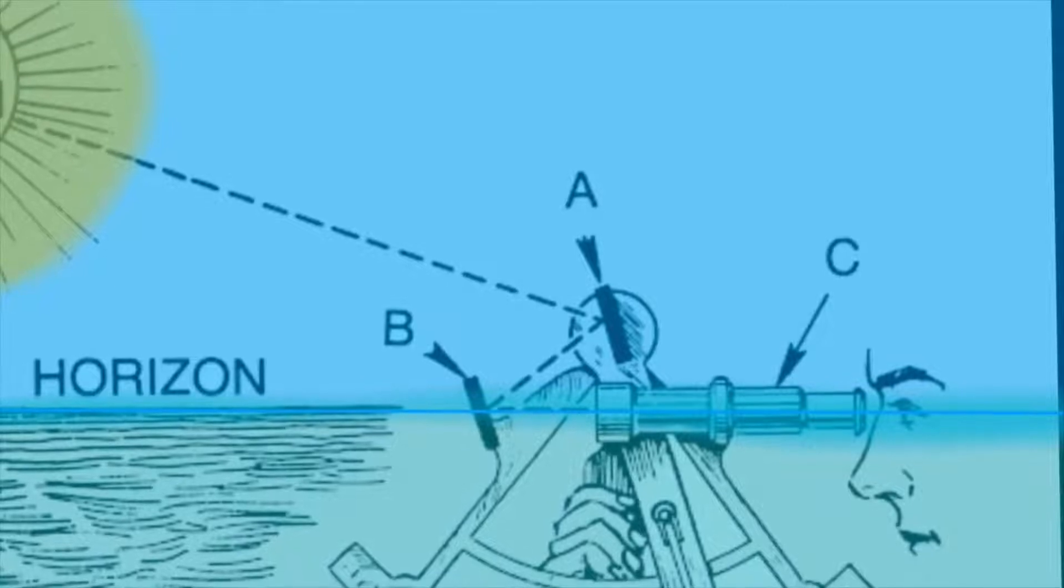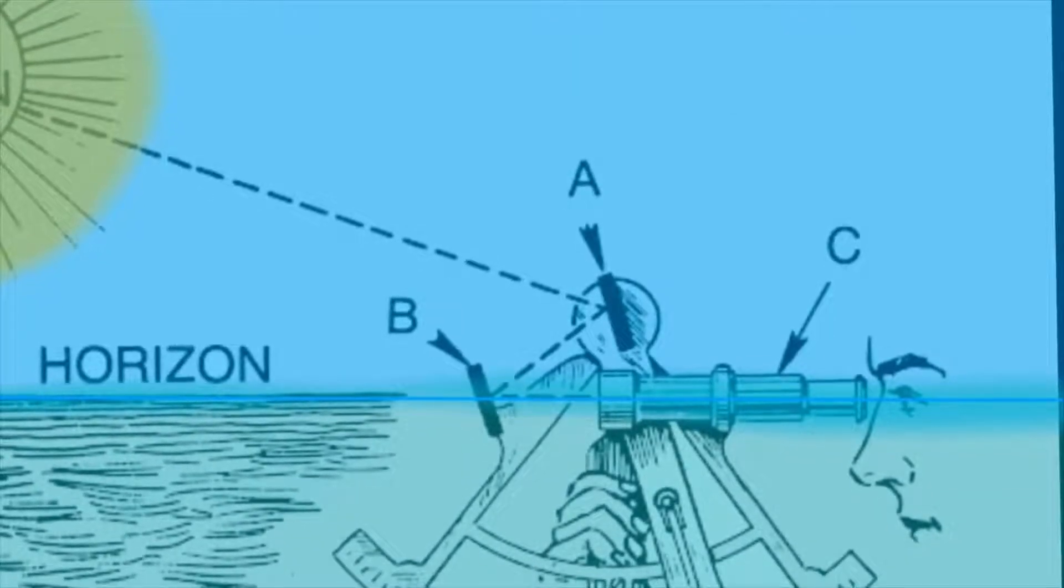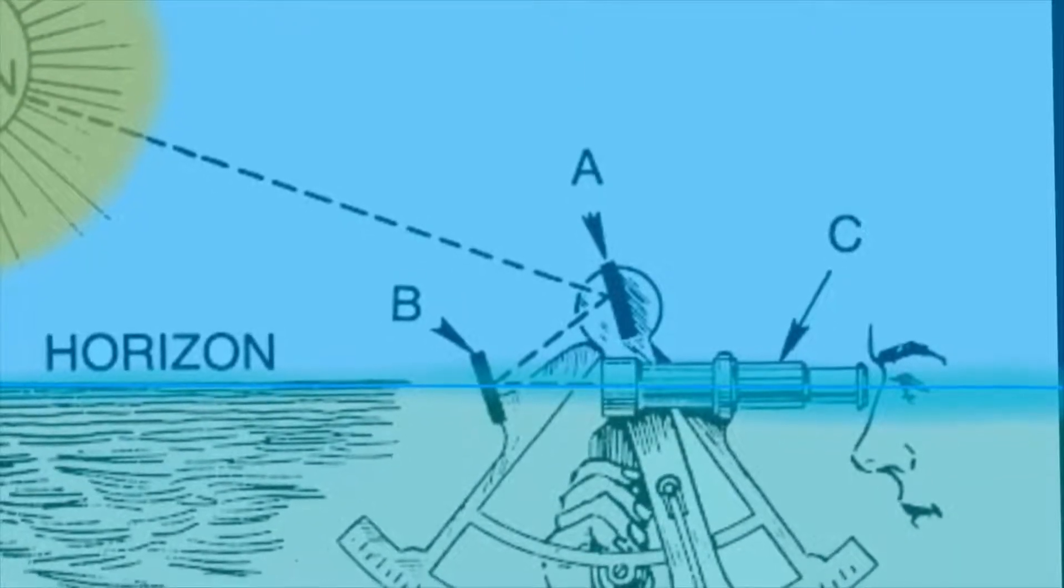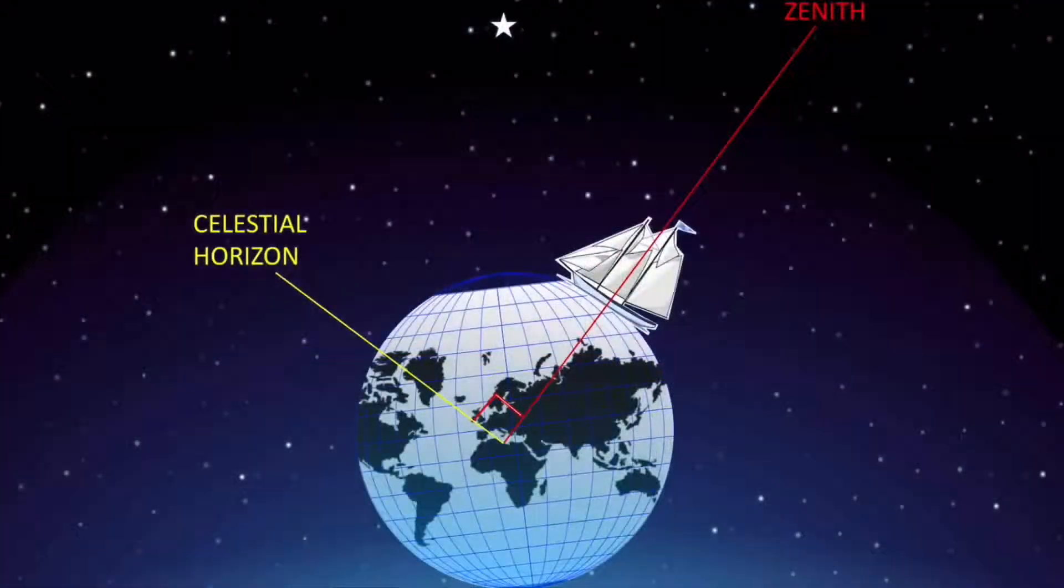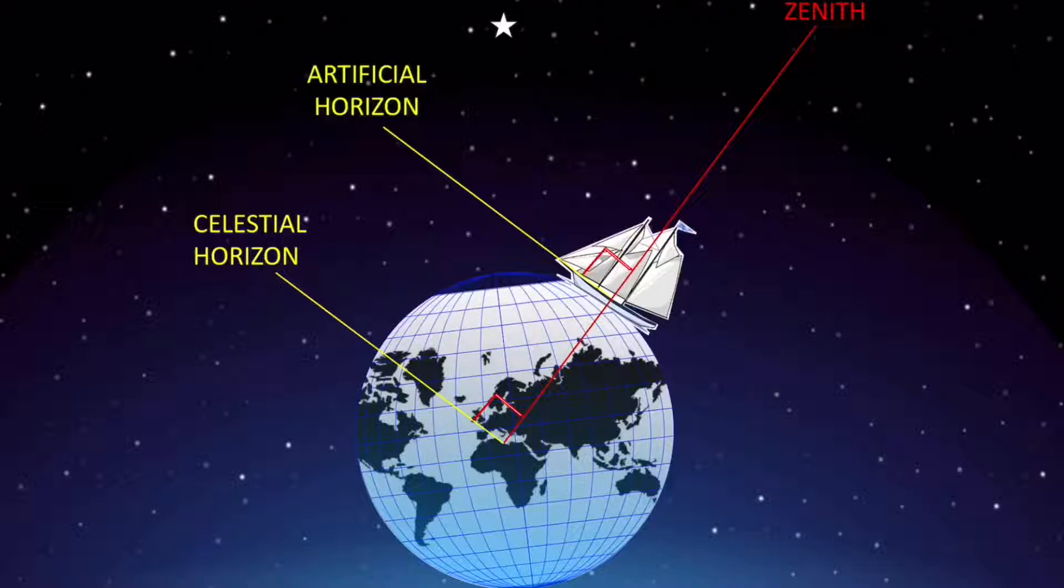But globe believers, realizing that their visual horizon is refracted, can't yet look at the horizon through the sextant. So yet another horizon is needed to be fabricated. They use the bubble level in the sextant to create the artificial horizon, which we are then told is parallel to the celestial horizon, essentially taking away the curvature of the earth.